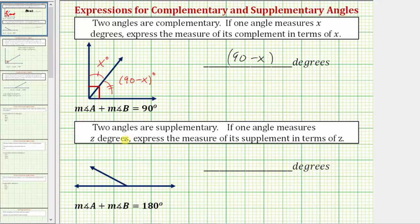Next, we're told two angles are supplementary. If two angles are supplementary, the sum of their measures equals 180 degrees, which means if we were to combine the two angles, as shown here, they would form 180 degrees, or a straight angle. So this angle and this angle are supplementary.